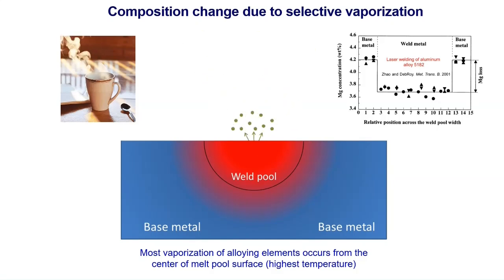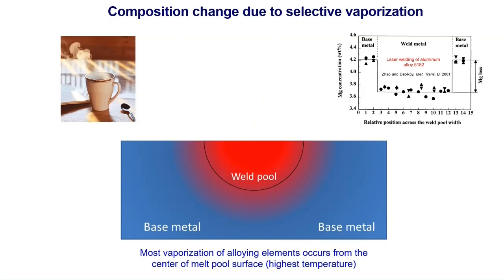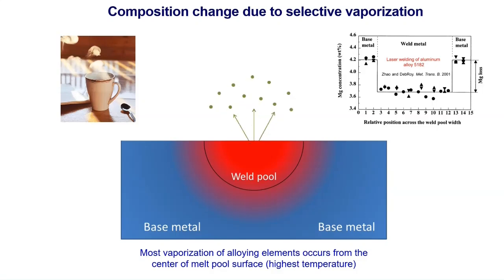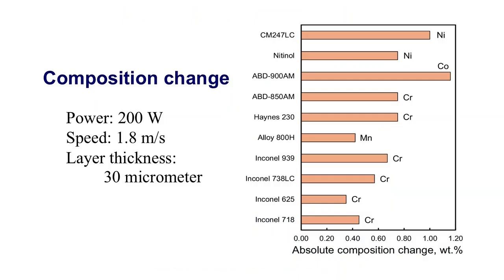These compositional changes can significantly impact the microstructure, mechanical properties, and corrosion resistance of the manufactured components. During the laser powder bed fusion process, volatile alloying elements can selectively vaporize from the molten pool, leading to variations in the chemical composition of the final part compared to the original feedstock. The rate at which these elements vaporize depends on their vapor pressure, which is influenced by local temperature and alloy composition.